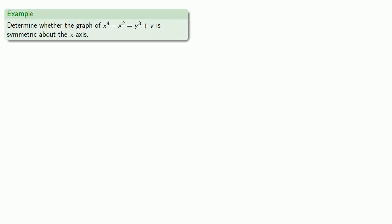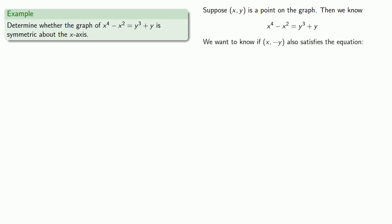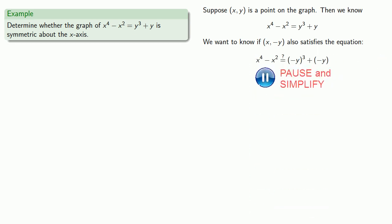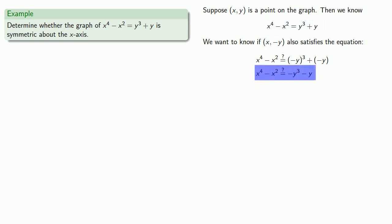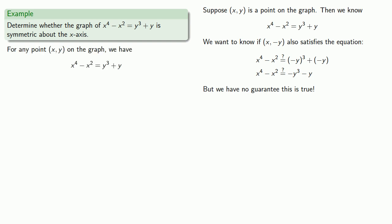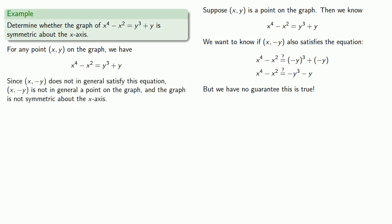Let's see if our graph is symmetric about the x-axis. Suppose (x, y) is a point on the graph, then the x and y coordinates satisfy the original equation. We want to know if (x, -y) also satisfies the equation, so let's substitute and check. While we know the original equation is true, we don't know whether the substituted equation is true — we have no guarantee. Without that guarantee, we cannot conclude symmetry. So the graph is not symmetric about the x-axis.